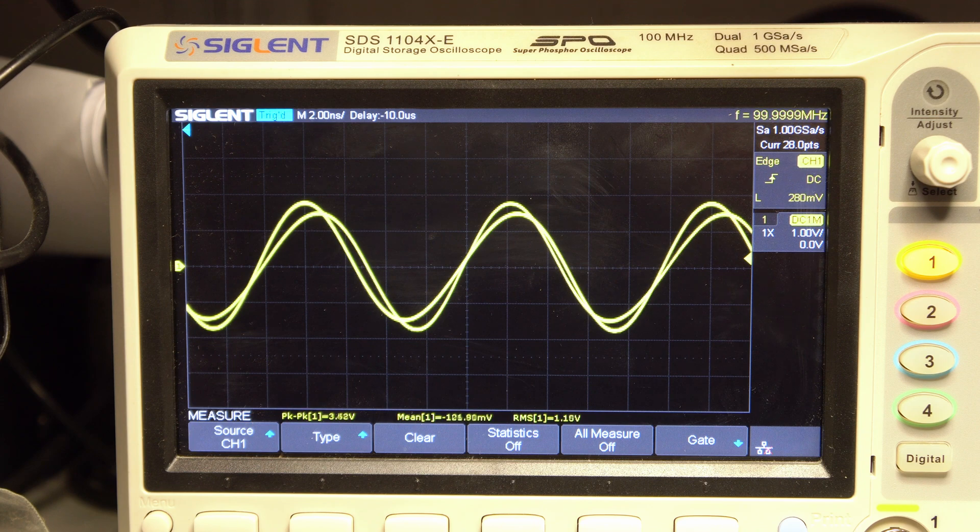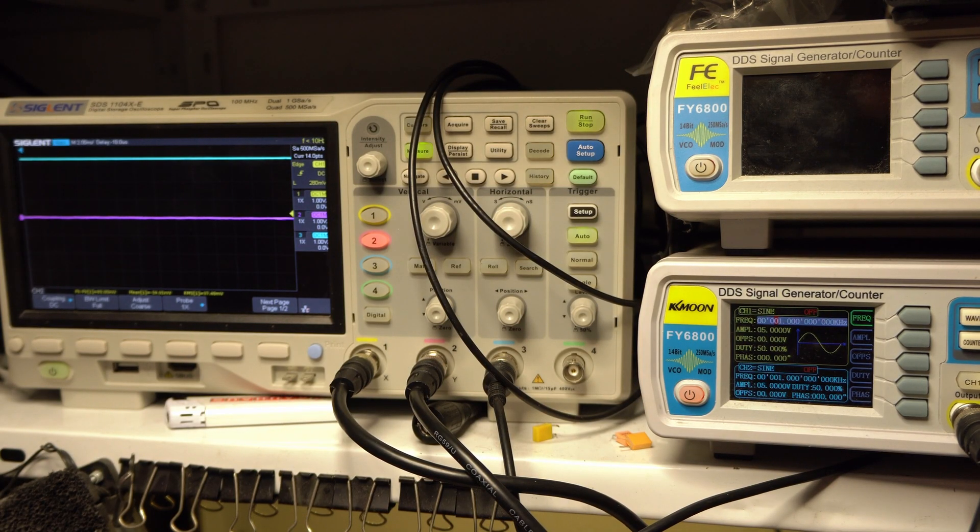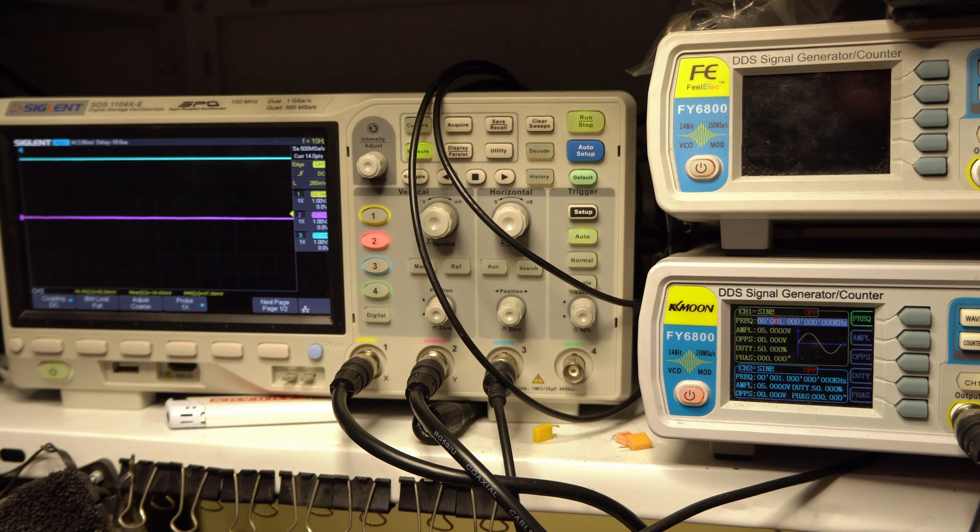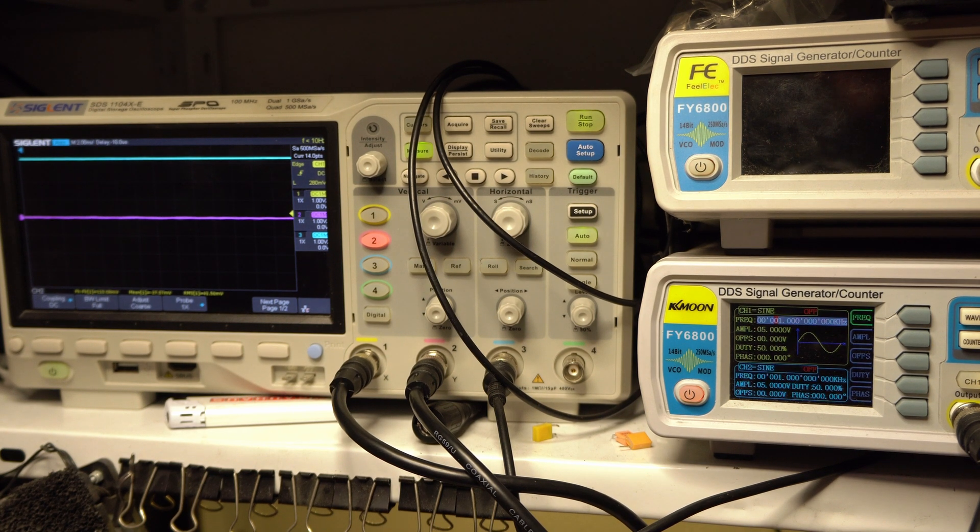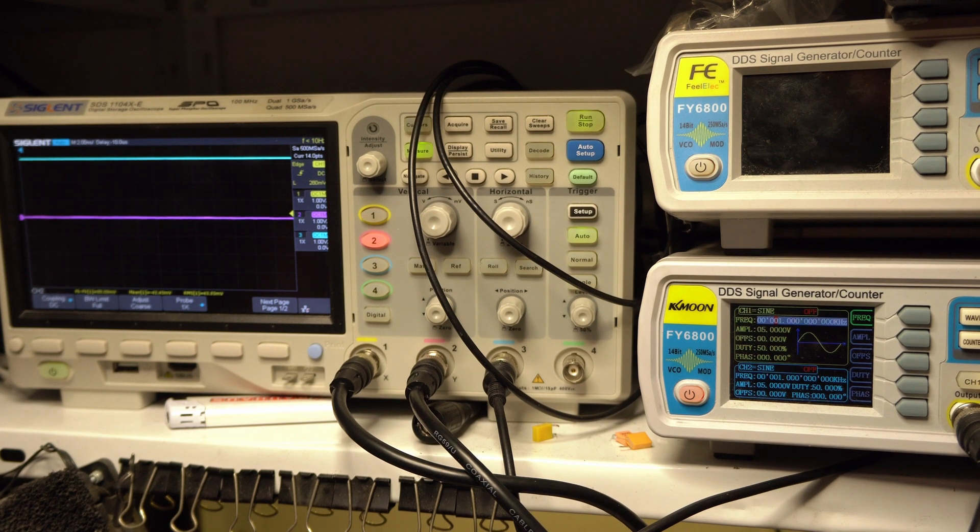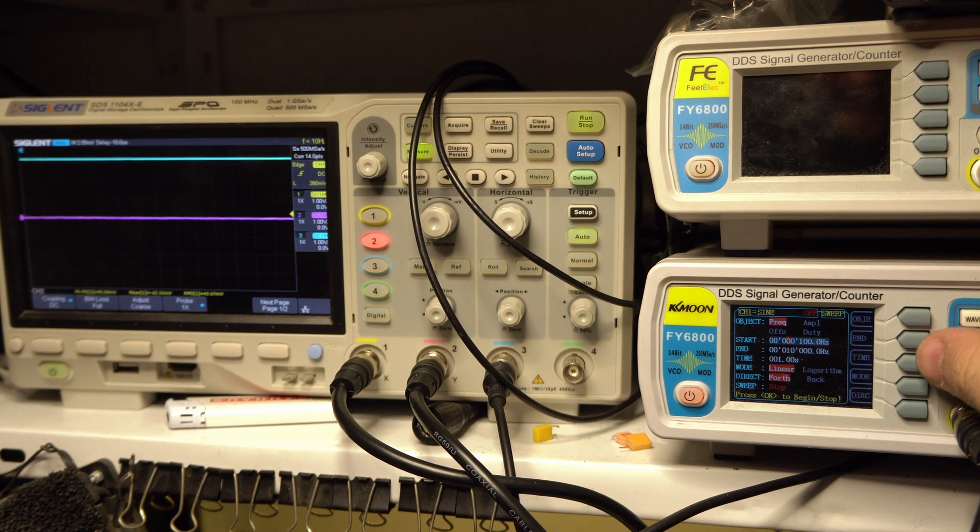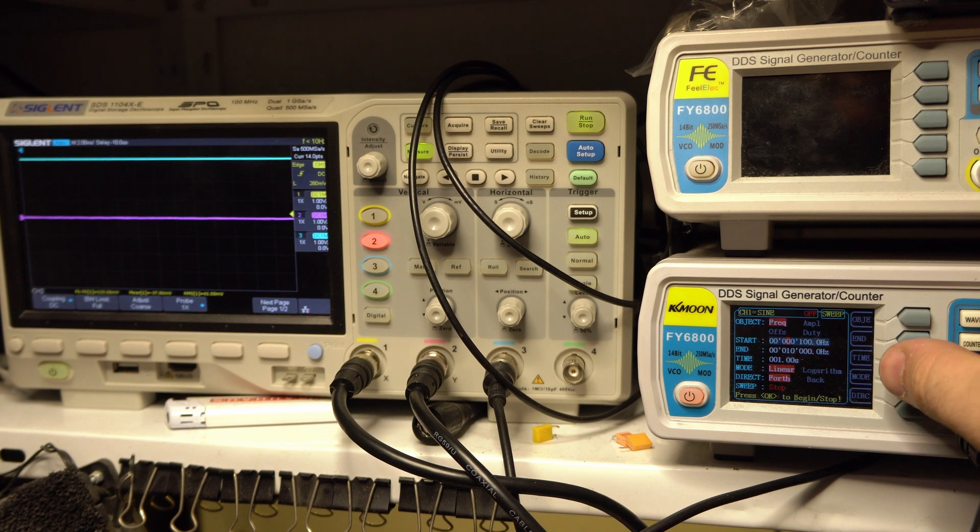Let's go on to trick number two. So trick number two is, well it's a workaround for this model. In my previous review I said that it doesn't have a trigger output. So when we go into the sweep mode by pressing the sweep button, we can set a sweep from let's say 100 megahertz to 10 kilohertz with one second timer.